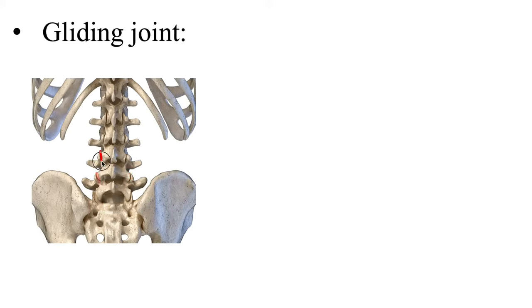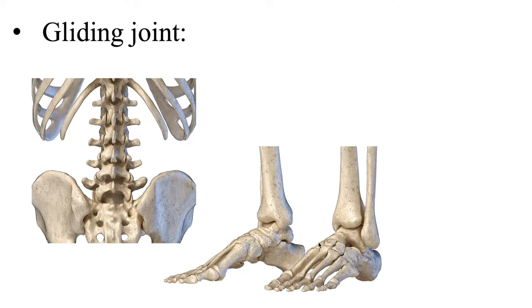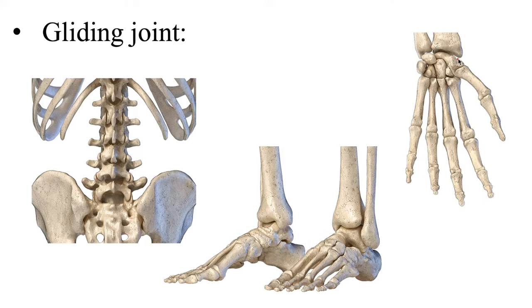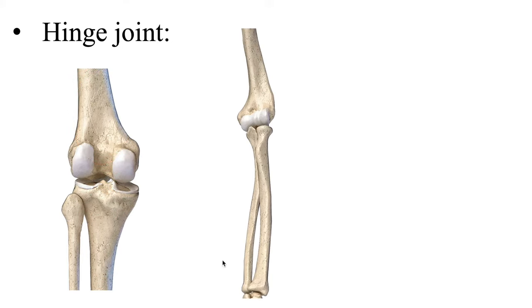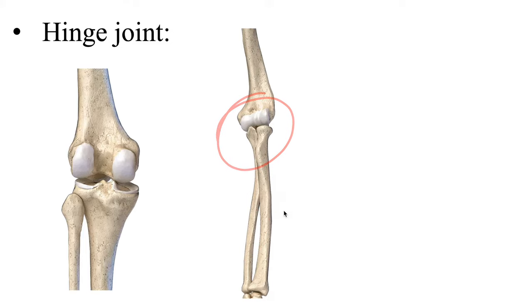Next, we have gliding joints — formed when two flat surfaces of bones articulate and glide. We have the intertarsals, where bones within the tarsals glide, as well as the intercarpals between the carpals. Next, we have the hinge joint, which functions like a hinge on a door, only able to open or close in one plane. For example, the knee — the tibial femoral joint where the tibia and femur meet — and the elbow, the humeral ulnar or humeral radial joint, where the humerus meets the radius or ulna.